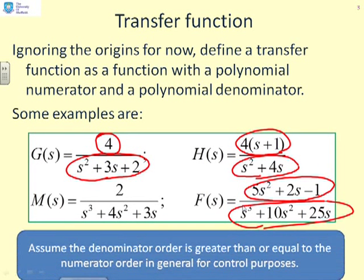As a small aside, if we're talking about control engineering, it's normal to assume that the denominator order is greater than or equal to the numerator order. It's not mandatory in general, but most examples this will certainly be the case, because in real engineering contexts with real transfer functions, this is what happens.